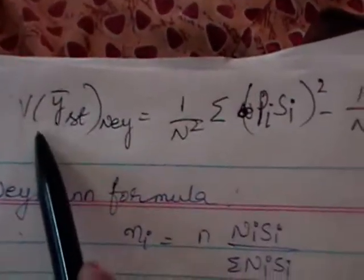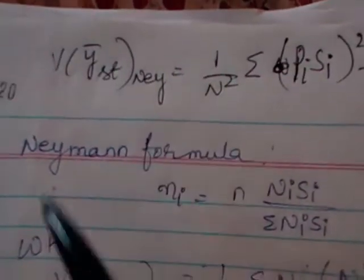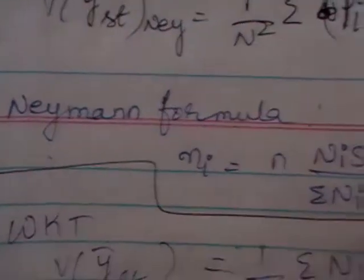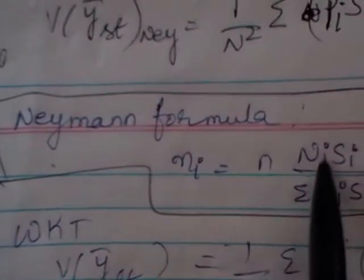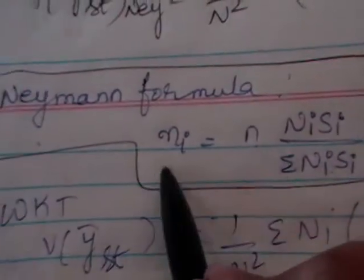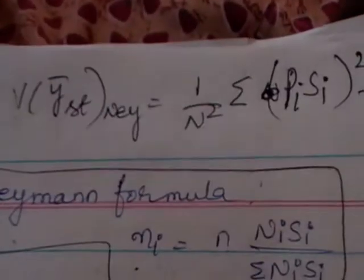We are going to derive the expression for the variance of stratified random sampling under Neyman allocation, also called optimum allocation. In the previous class, we derived that ni is equal to n times NiSi divided by Sigma NiSi. Using this, we are going to evaluate this expression.